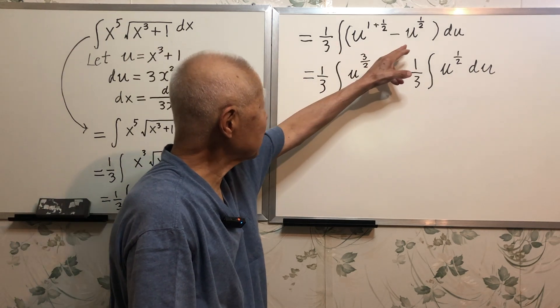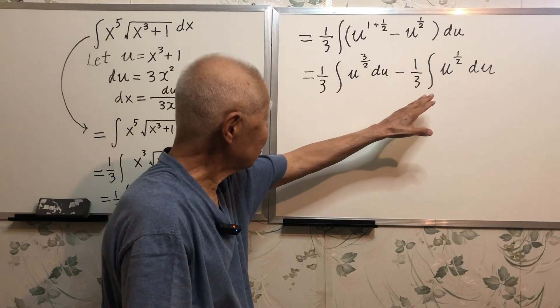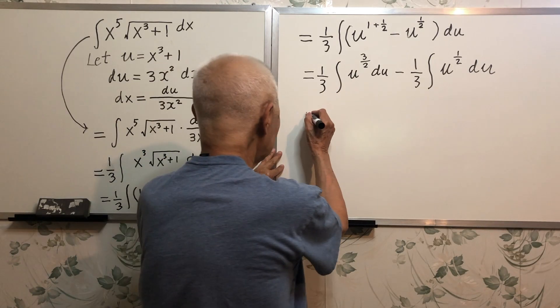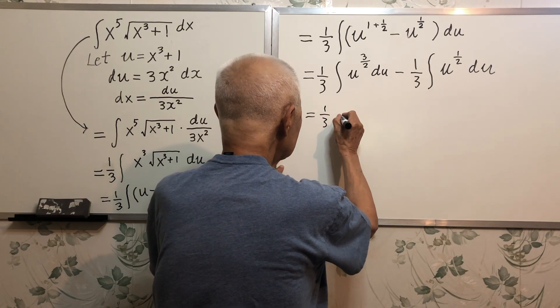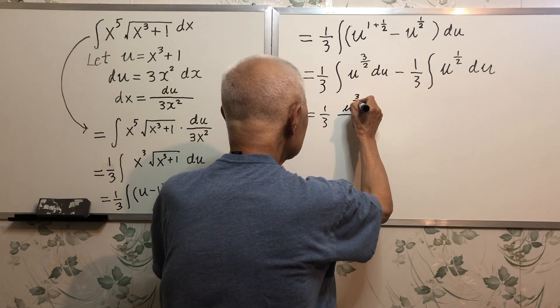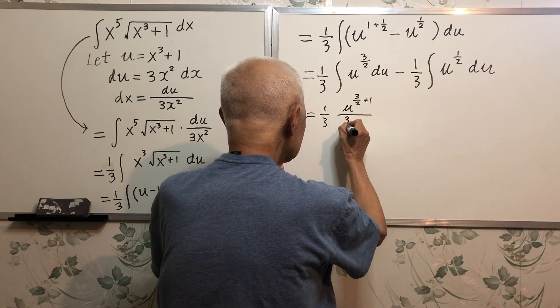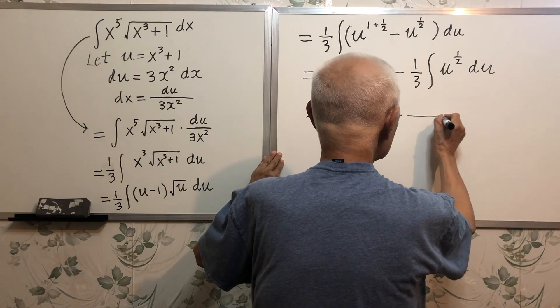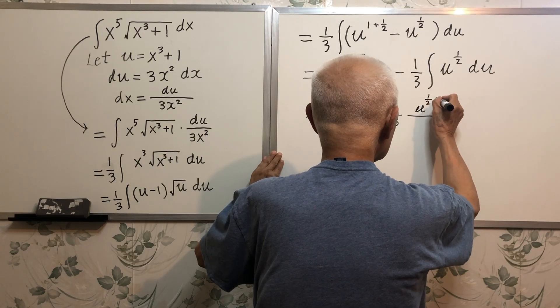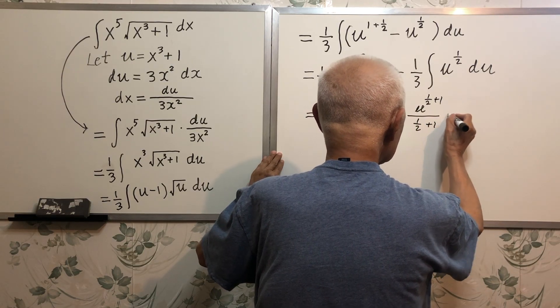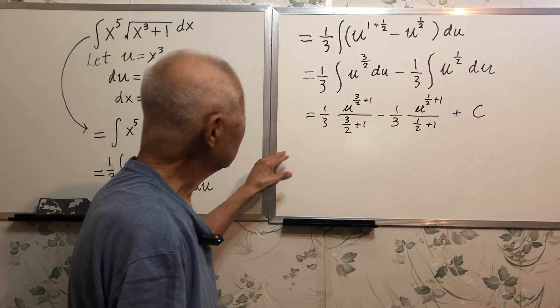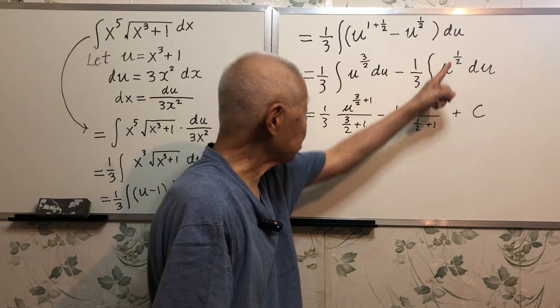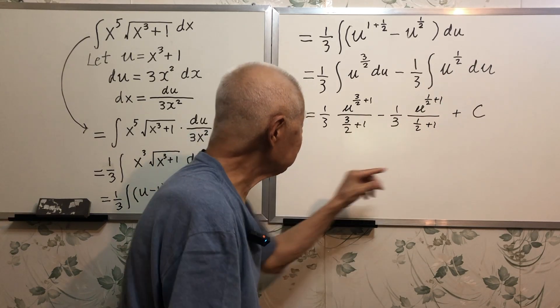Integrate each term separately. I have this and this. Now you use formula for integration, that's a power rule, right? So use the power rule, this plus one and divide it by this, this plus one divide by the same thing, integration constant.